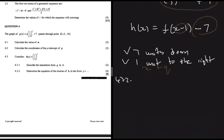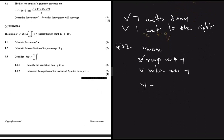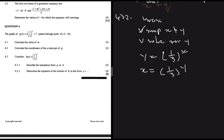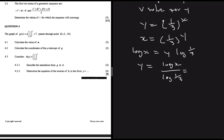For 4.3.2, find the inverse of h in the form y = ... Starting with h: y = (1/3)^x. Swap x and y: x = (1/3)^y. Take logs of both sides: log x = y·log(1/3), so y = log x / log(1/3) = log base (1/3) of x.